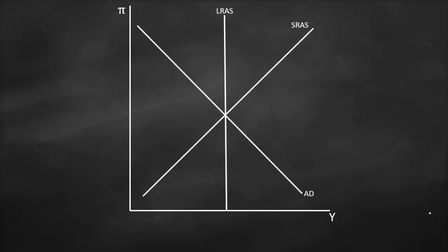The three curves intersect at the same point here, which we call point A, or the equilibrium point, where we have our potential output, or natural rate of unemployment, and inflation rate. In this video, we would like to focus on the long-run aggregate supply curve — specifically, why the long-run aggregate supply curve is vertical.